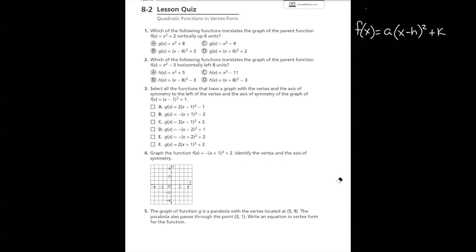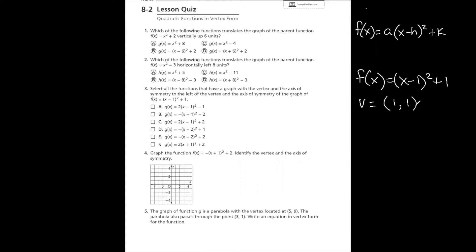Number 3 says select all functions that have a vertex and axis of symmetry to the left of the vertex and axis of symmetry of f of x equals x minus 1 squared plus 1. Starting with that reference equation, the vertex is (1, 1) — opposite of what's inside the parentheses, and exactly what's written outside. The axis of symmetry is x equals 1. We're looking for functions where these values are less than positive 1.